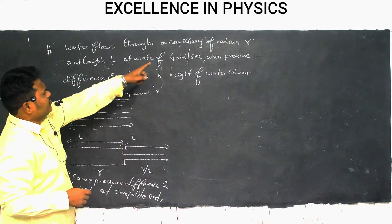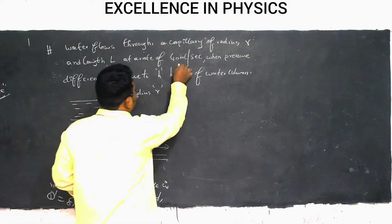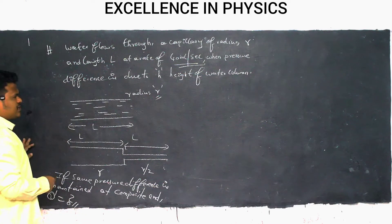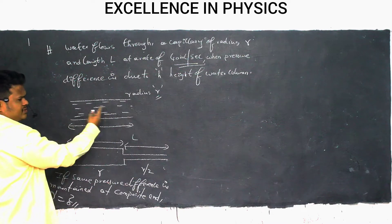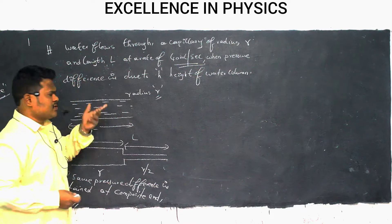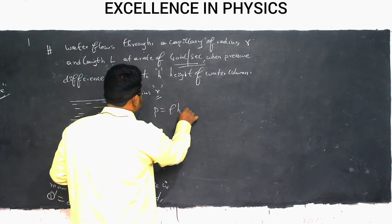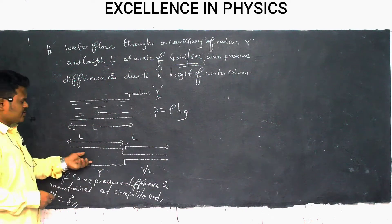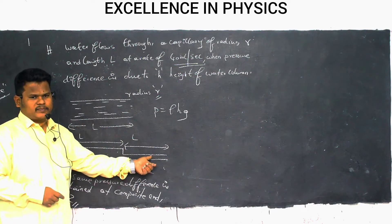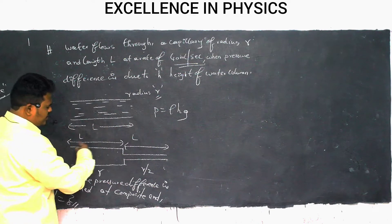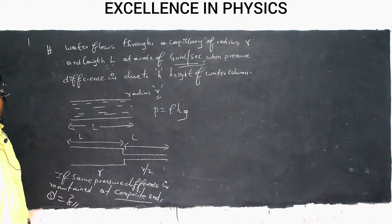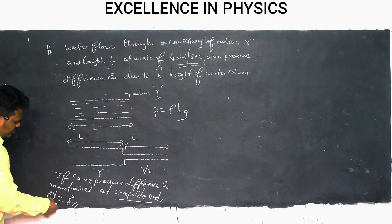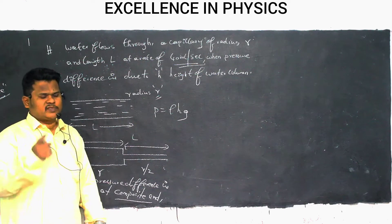Problem: Water flows through a capillary of radius r and length l at a rate of 40 ml/s with pressure difference ρhg. A second capillary of radius r/2 and the same length l is now connected in series. If the same pressure difference is maintained across the composite ends, what is the new rate of flow Q'?